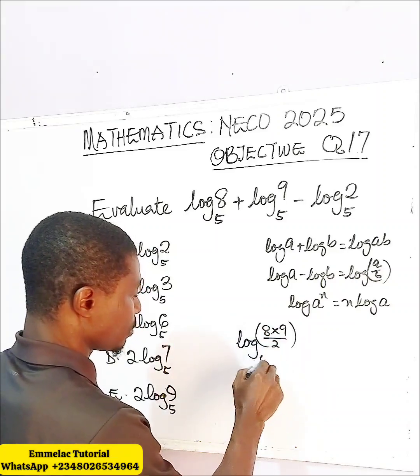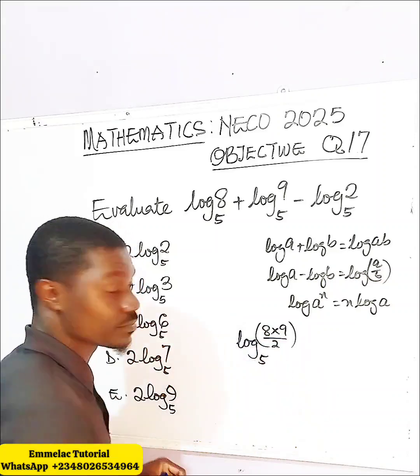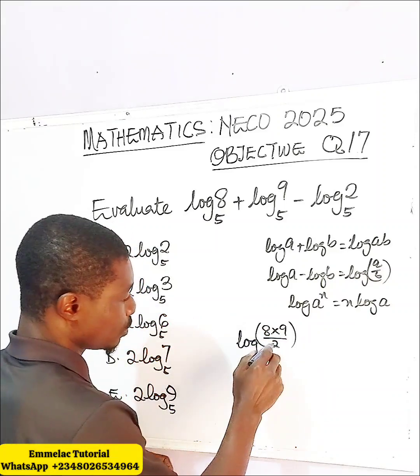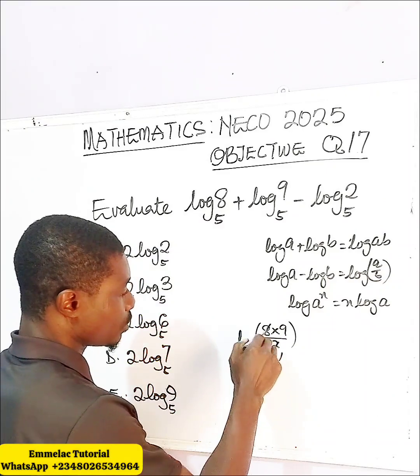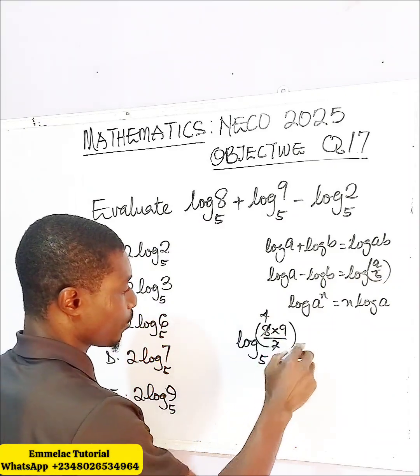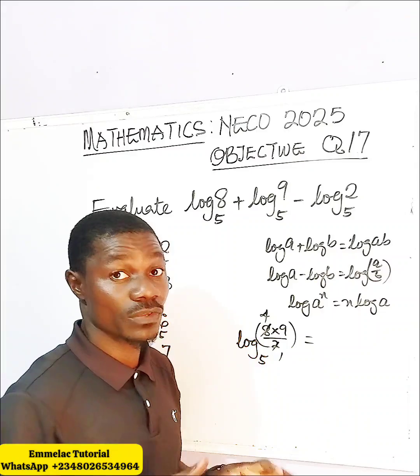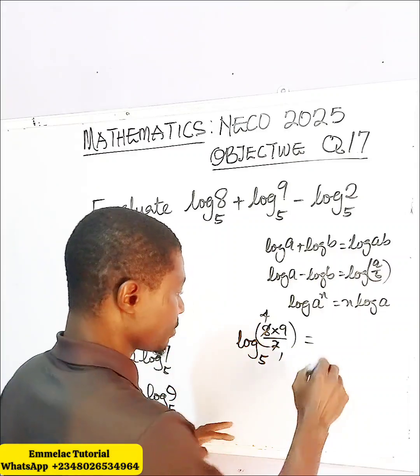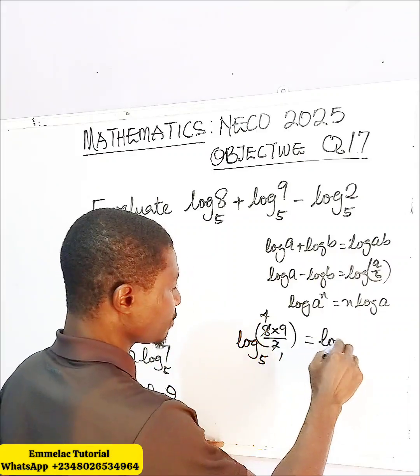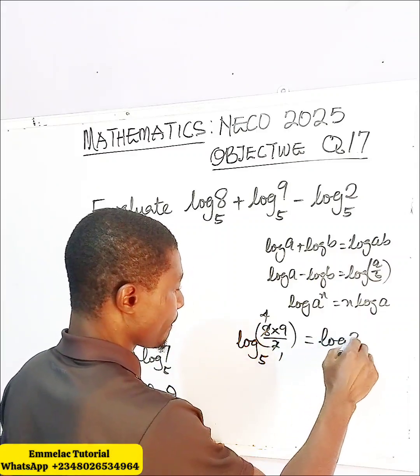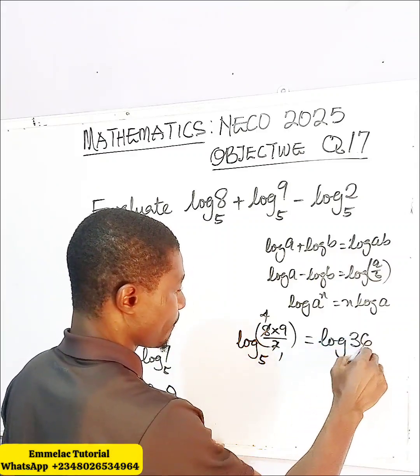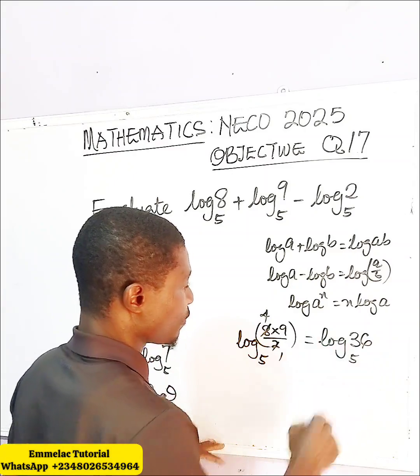Take note: base 5. So 8 divided by 2 gives 4, and 4 times 9 gives us 36. So we have log base 5 of 36.